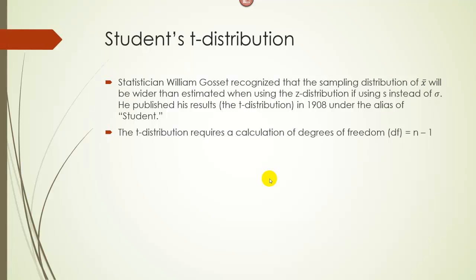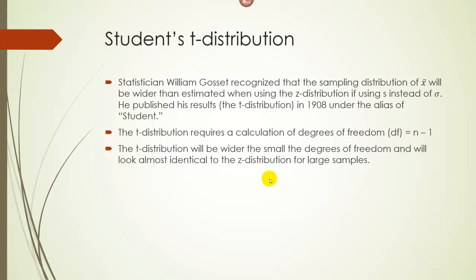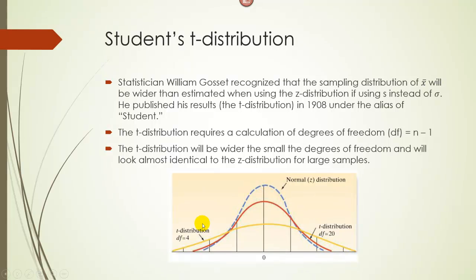The T distribution looks a lot like the normal distribution, but it's shorter and fatter. With a degrees of freedom of four — meaning a sample size of five — it looks like the yellow distribution, where the blue one is the normal distribution. Both are mound-shaped and symmetrical, but the T distribution is shorter and fatter. As the sample size increases, such as a degrees of freedom of 20, the T curve looks very close to the normal curve. By a sample size of 30 or 40, they look almost identical — which is why we use the Z distribution when we have a large sample.